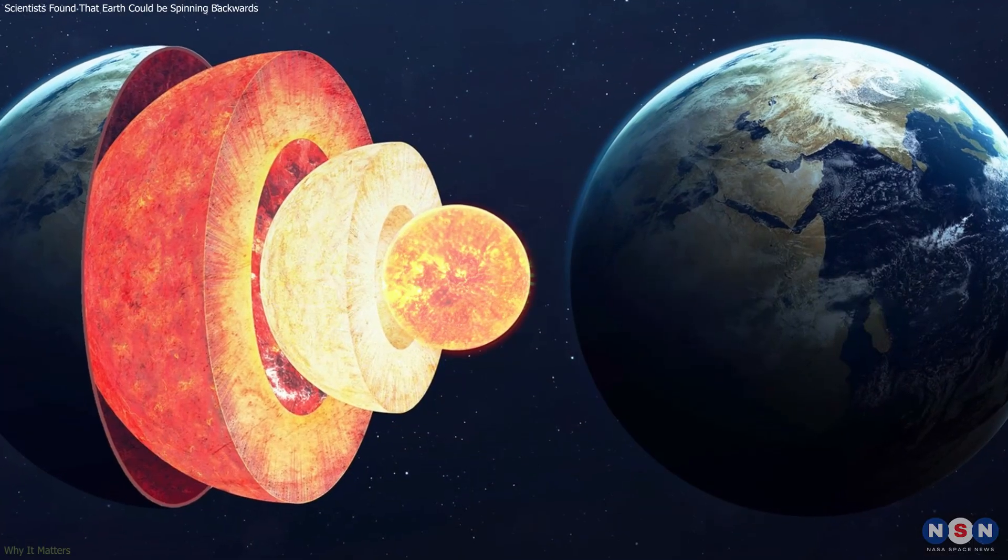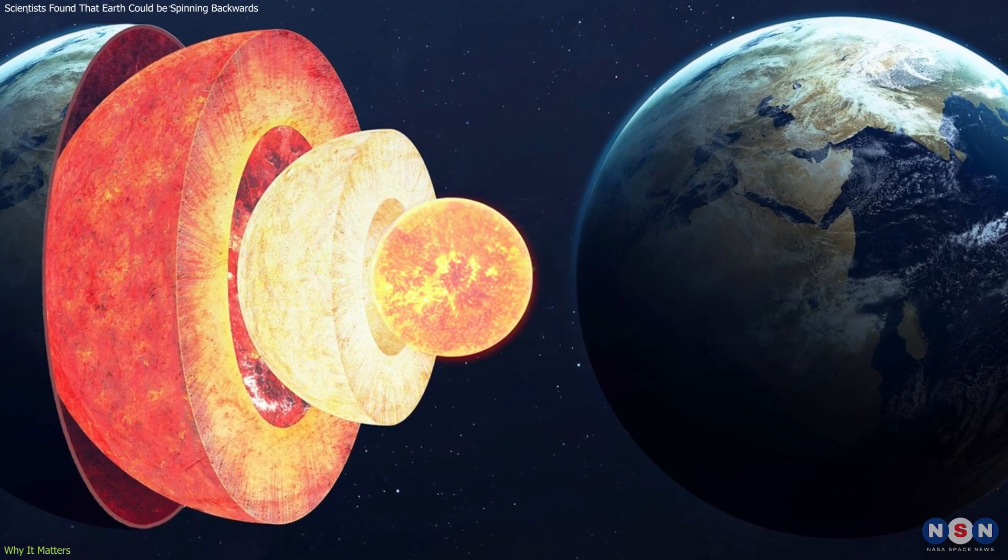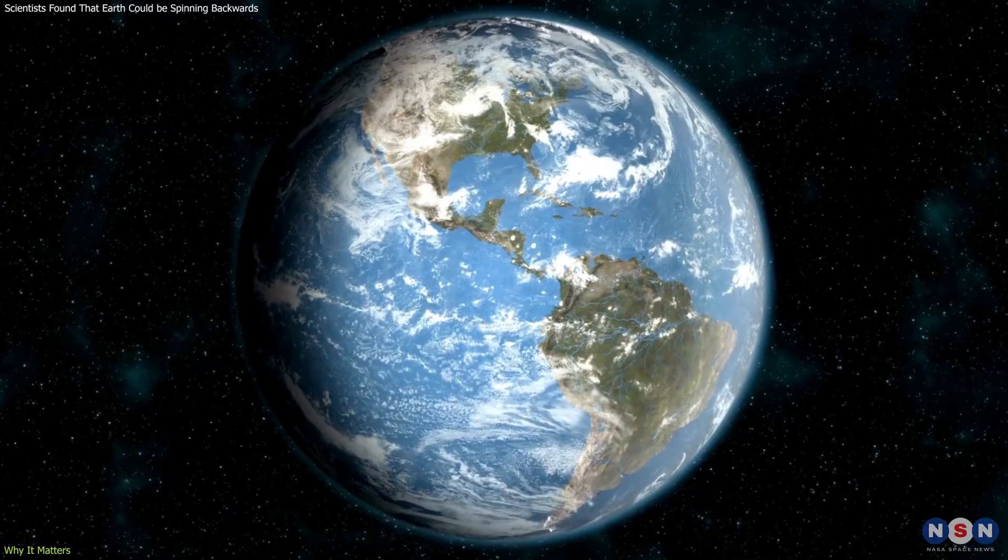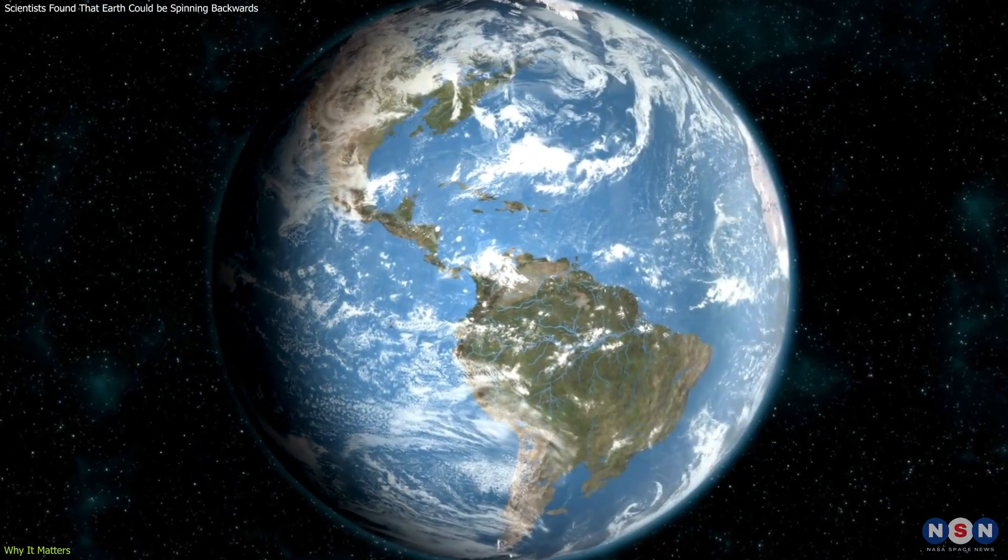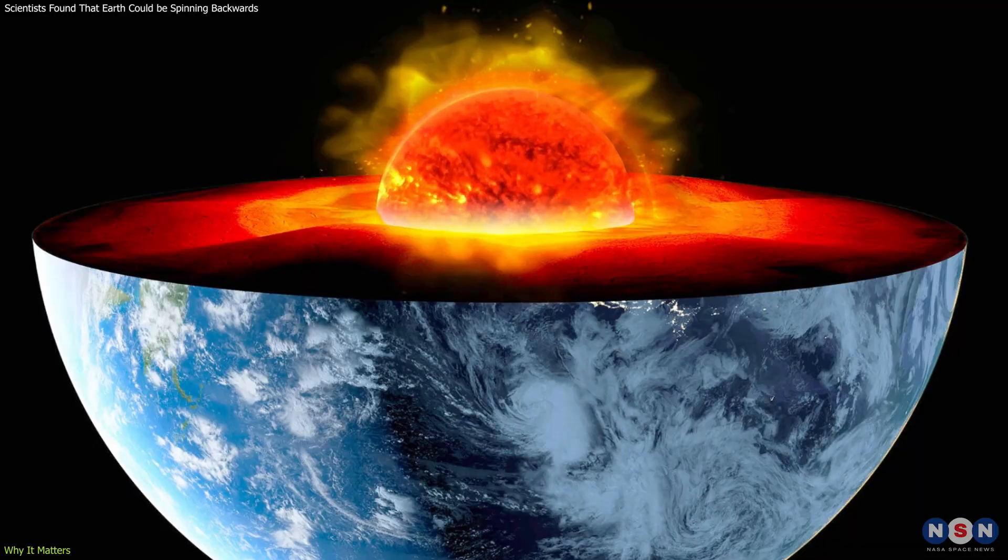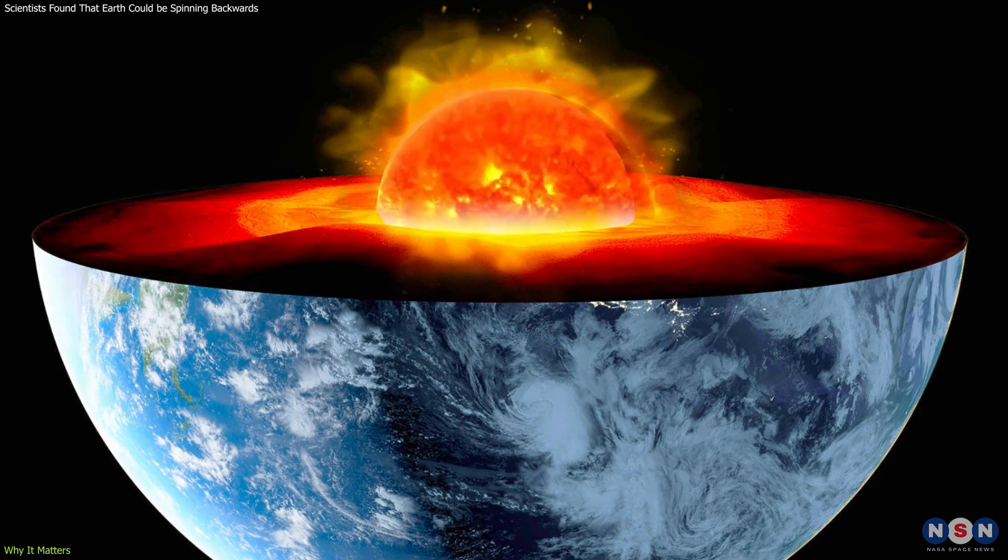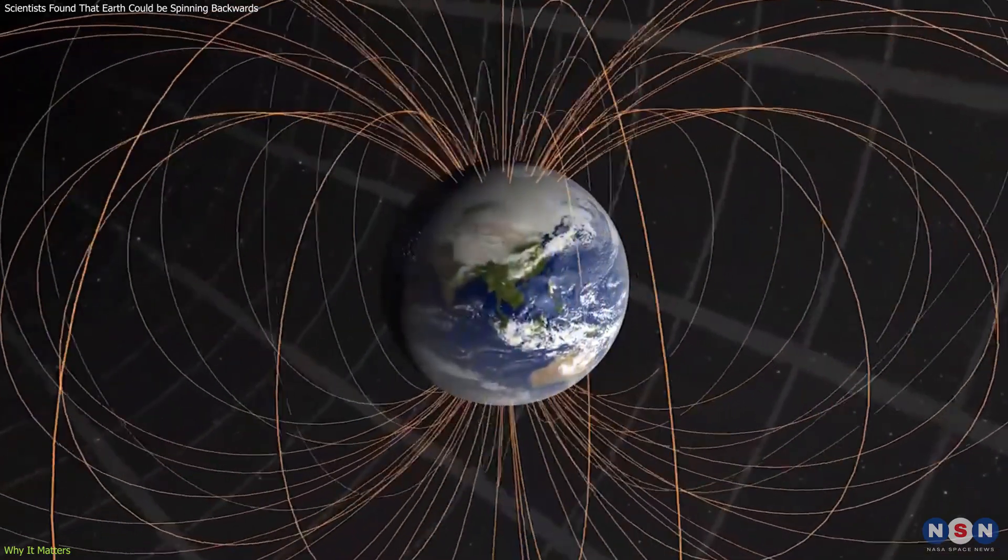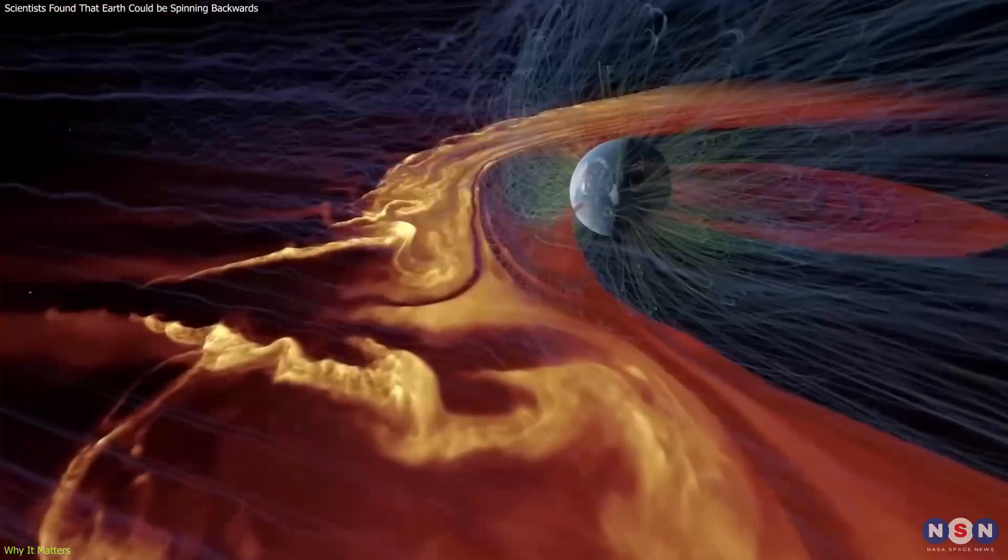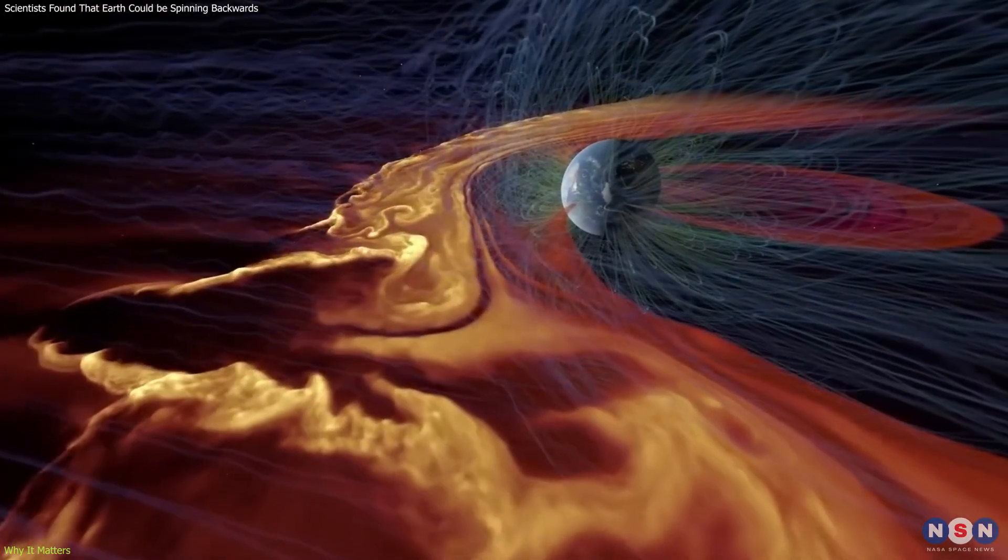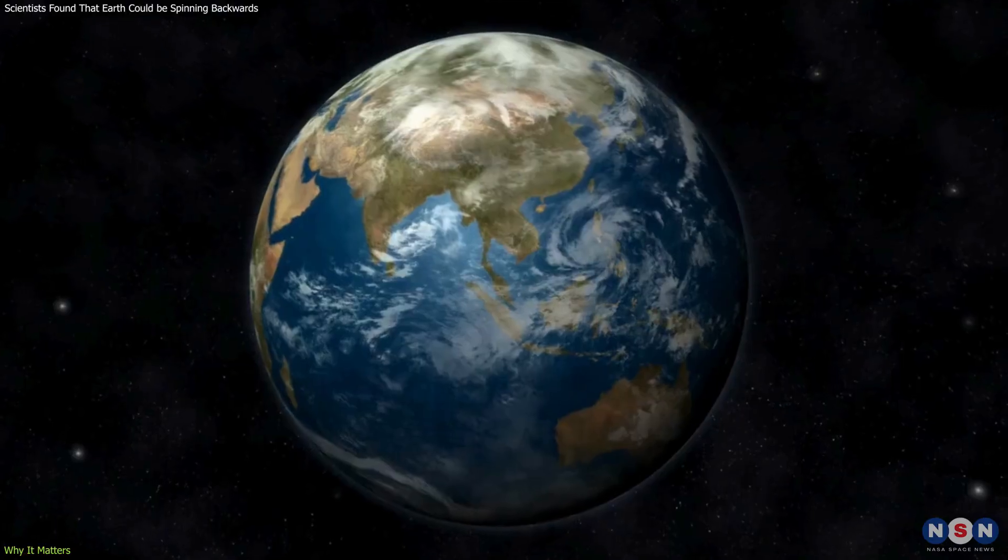The findings about the inner core's rotation are not just academic exercises. They have real-world implications that can affect all of us on the surface. The most direct impact of changes in the inner core's rotation is on Earth's magnetic field. This field protects our planet from the sun's harmful solar radiation, making life possible.